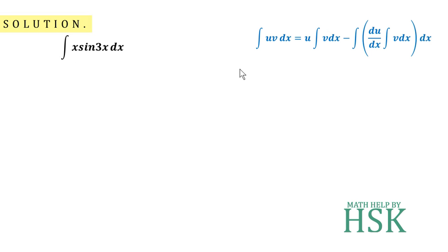To solve such questions, we apply integration by parts. The formula states that for the product of two functions u and v, where u is the first function and v is the second function, the integral equals: first function times integral of second function minus...